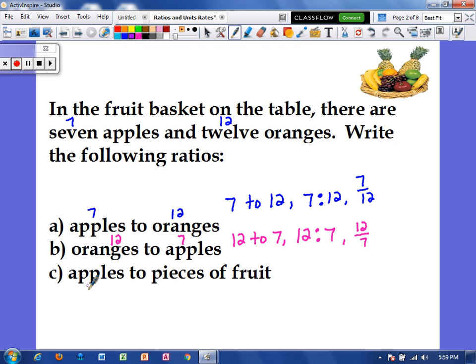And finally, we have apples to pieces of fruit. Well, there are seven apples, and pieces of fruit would mean the apples and oranges combined. So that would be 19. So that would be 7 to 19.